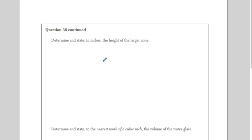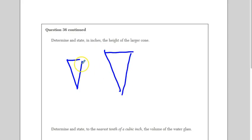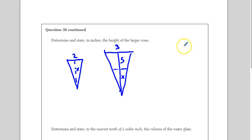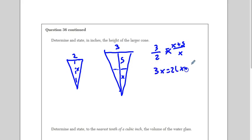Now determine the height of the larger cone in inches. Let's show our two triangles — triangle one, the small triangle, and triangle two, the bigger triangle. In our big triangle, we know the radius is 3 and the whole height is going to be five plus x, where x is the rest of the height. In our other triangle we have radius 2 and height x. We set up our proportion: 3 is to 2 as x plus 5 is to x. Cross multiplying: 3x equals 2x plus 10. Subtract 2x from both sides, and we get x equals 10.